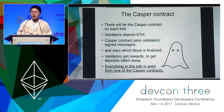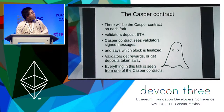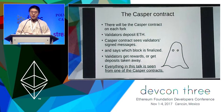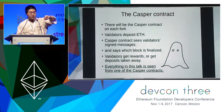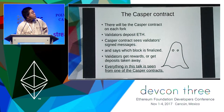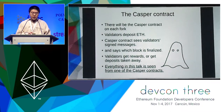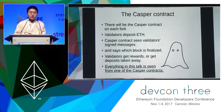There will be a Casper contract on each fork of the Ethereum network. There will be validators, and the validators will deposit ETH on the Casper contract. The validators vote for blocks, and the Casper contract keeps track of who voted for what and decides which block is finalized.